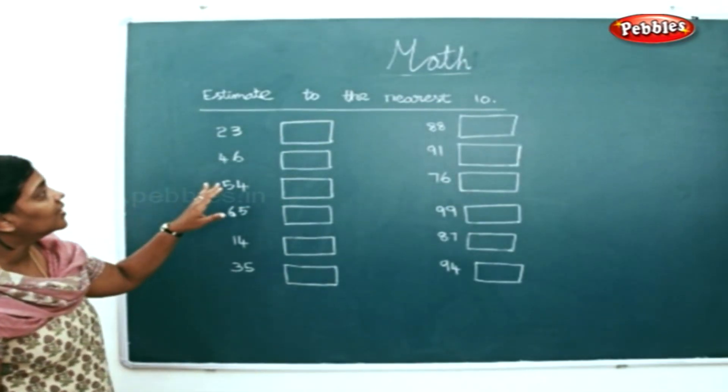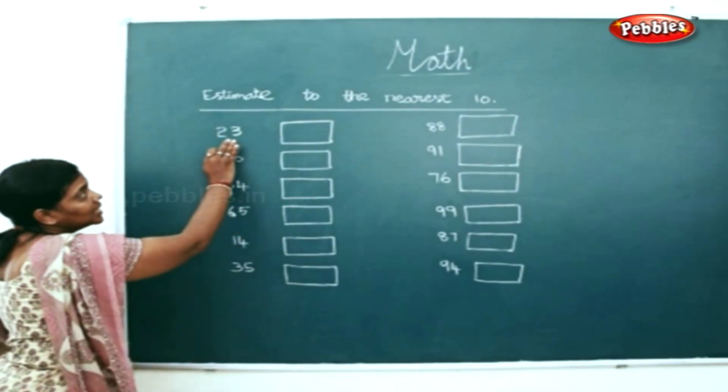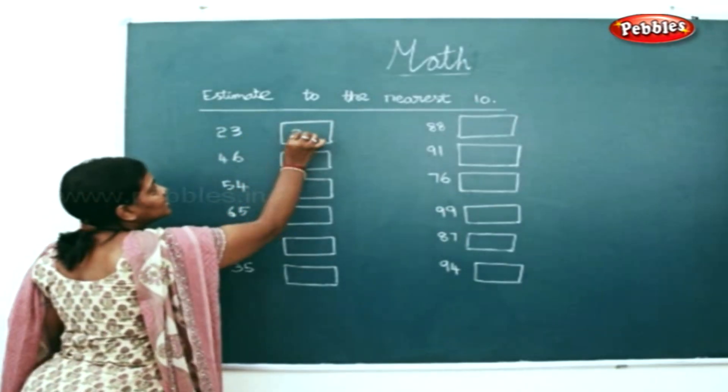Now we are going to estimate to the nearest 10. 23 - the nearest 10 will be 20.